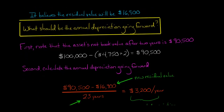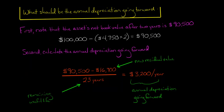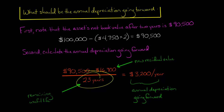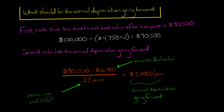Now we calculate the annual depreciation with the revised figures. We take $90,500 — the net book value, not $100,000, because we've already taken $9,500 of depreciation — and subtract the new residual value of $16,900, not the old figure of $5,000. Then we divide by the remaining useful life of 23 years. That gives us a figure of $3,200. So the new annual depreciation going forward, using straight-line, is $3,200 a year.